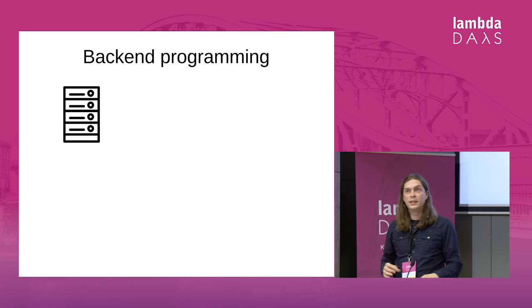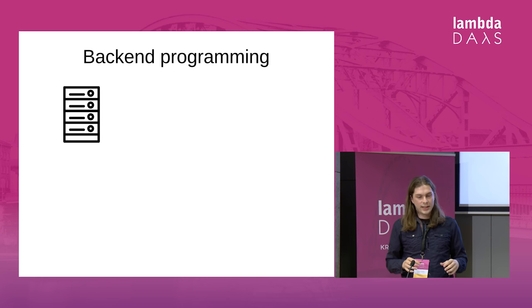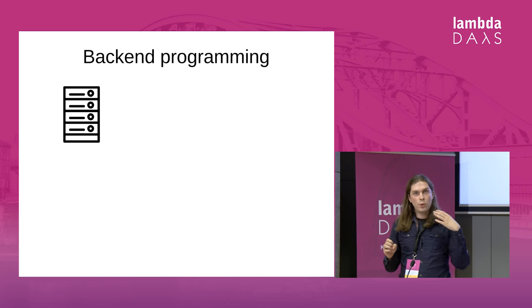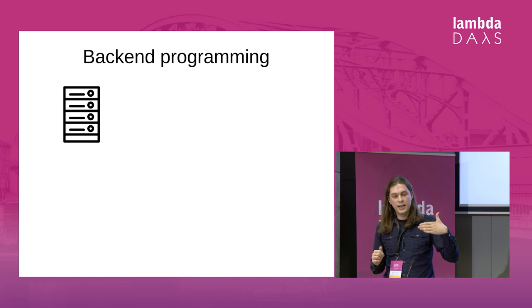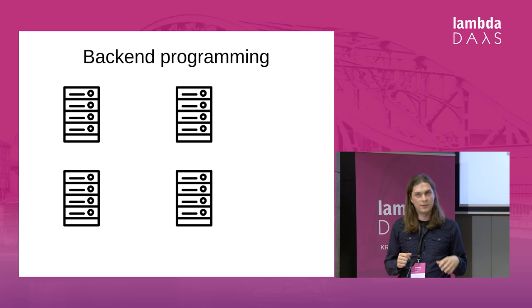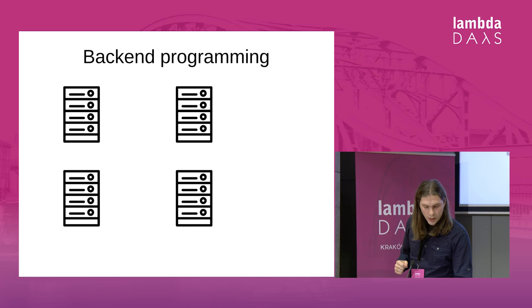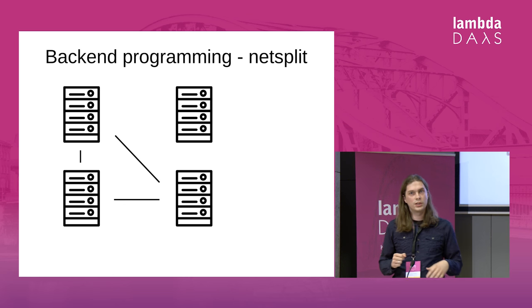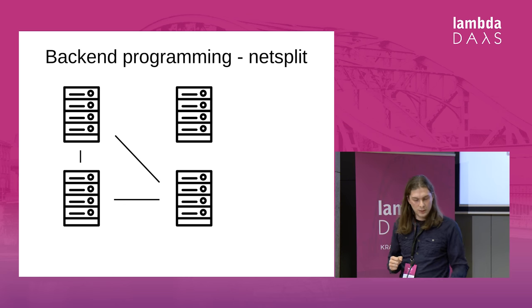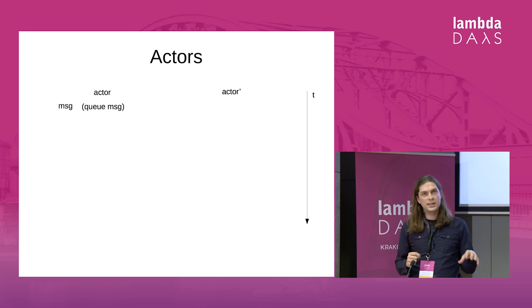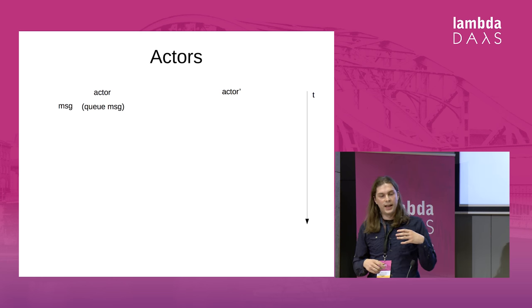Because we only have 20 minutes, let's quickly jump to backend programming. If I want to create a service that is really highly available, I have to put it on hardware that may fail, so I want multiple computers with a network between them. The network itself can fail, which leads to net splits. This is not really easy. In Elixir, this is solved by another model which is a little bit similar to Elm, but a little bit more complex.